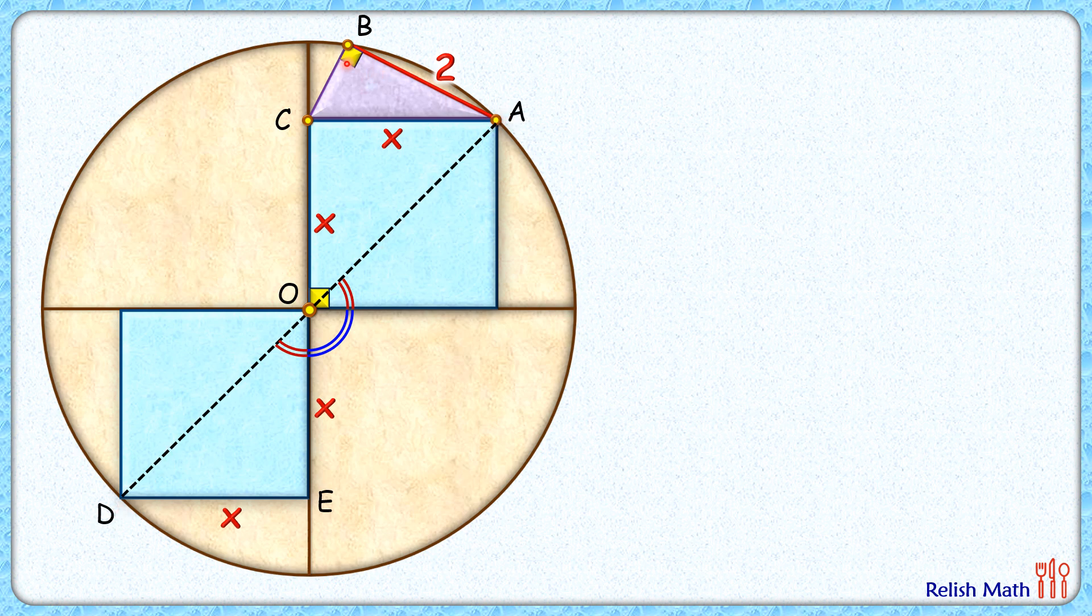And we know that a chord which is sustaining a 90 degree angle at the circumference has to be the diameter. So the chord which is sustaining this angle B and having one end as point A has to be the diameter. So we can say this length BC when extended will meet at point D.